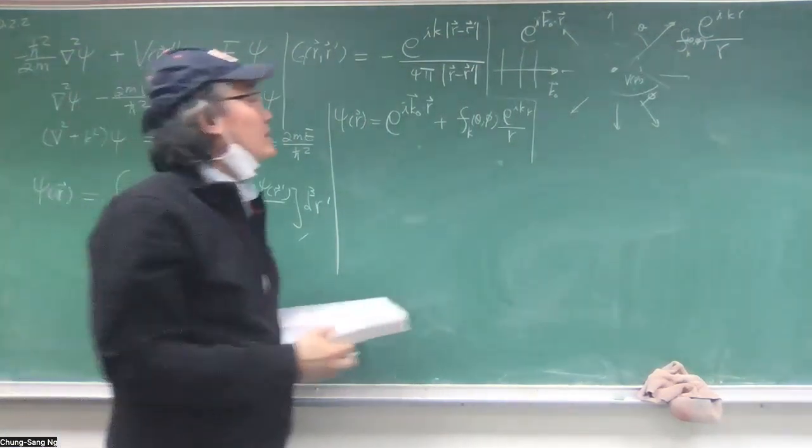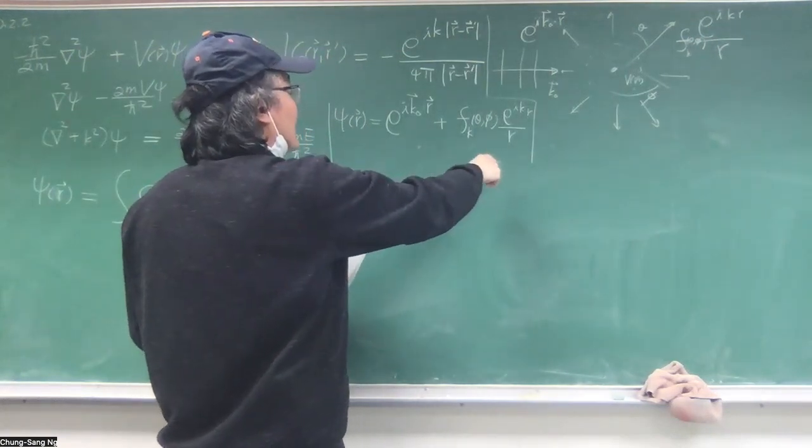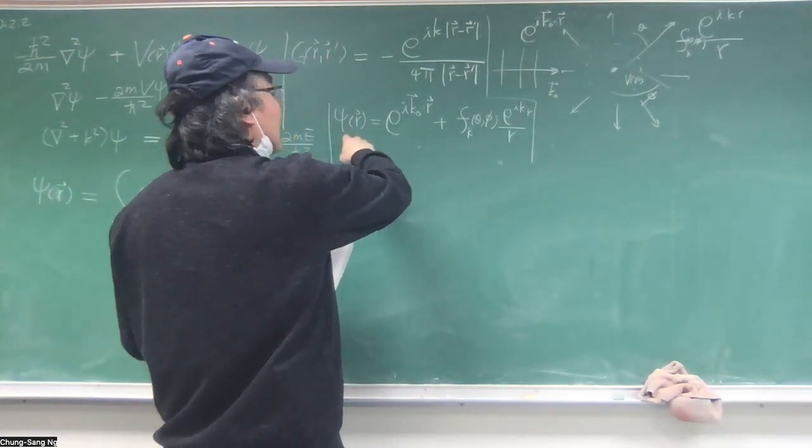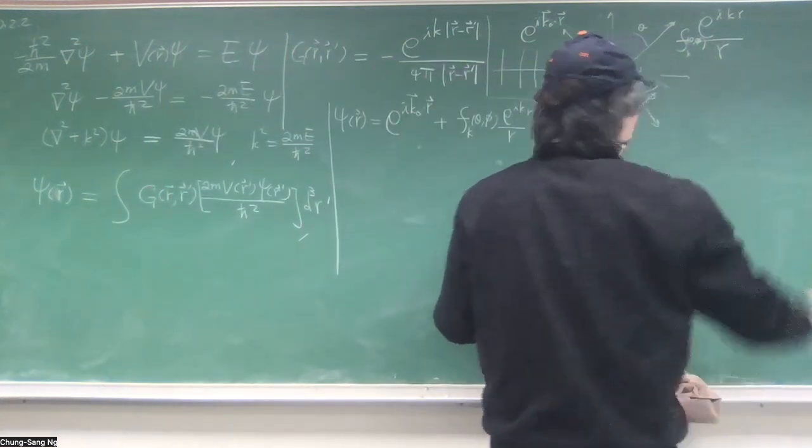So this is an outgoing spherical wave, but then modified by the angular dependence, that depends on theta and phi, also depends on whatever the K that is, you know, outgoing wave number. So that's this form.